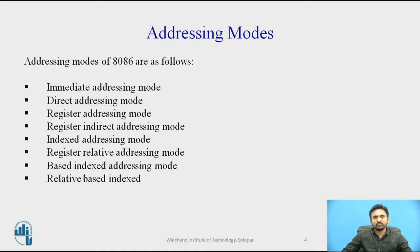The addressing modes of the 8086 microprocessor include: immediate addressing mode, direct addressing mode, register addressing mode, register indirect addressing mode, indexed addressing mode, register relative addressing mode, based indexed addressing mode, and relative based indexed addressing mode.